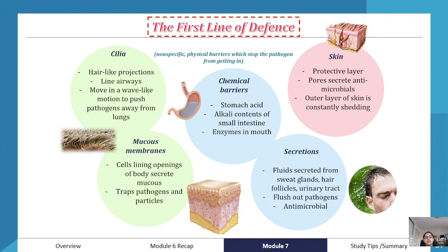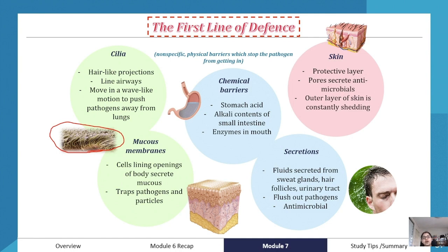The first line of defense includes physical barriers, which try to stop the pathogen from getting in. We've got cilia, which are hair-like projections that line our airways. They move in a wave-like motion to push pathogens away from the lung. A lot of the time pathogens get stuck in the cilia so they don't go through to the lung.